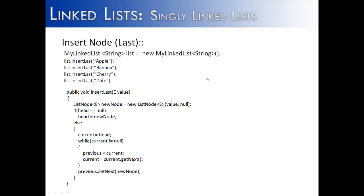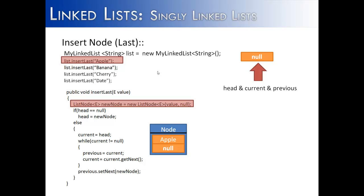The first thing we do is create our MyLinkedList called List. Then we're going to insert Apple into the list. We create a list node Apple, and it's not really part of the list yet because our head, current, and previous are still all equal to null.